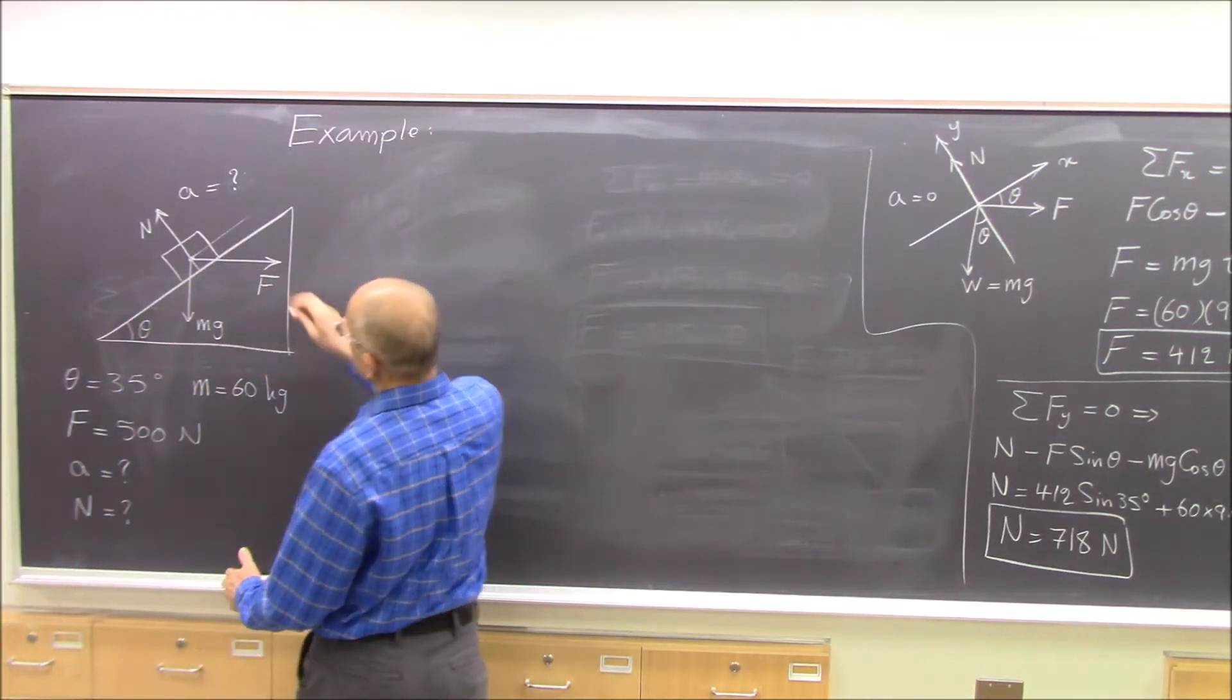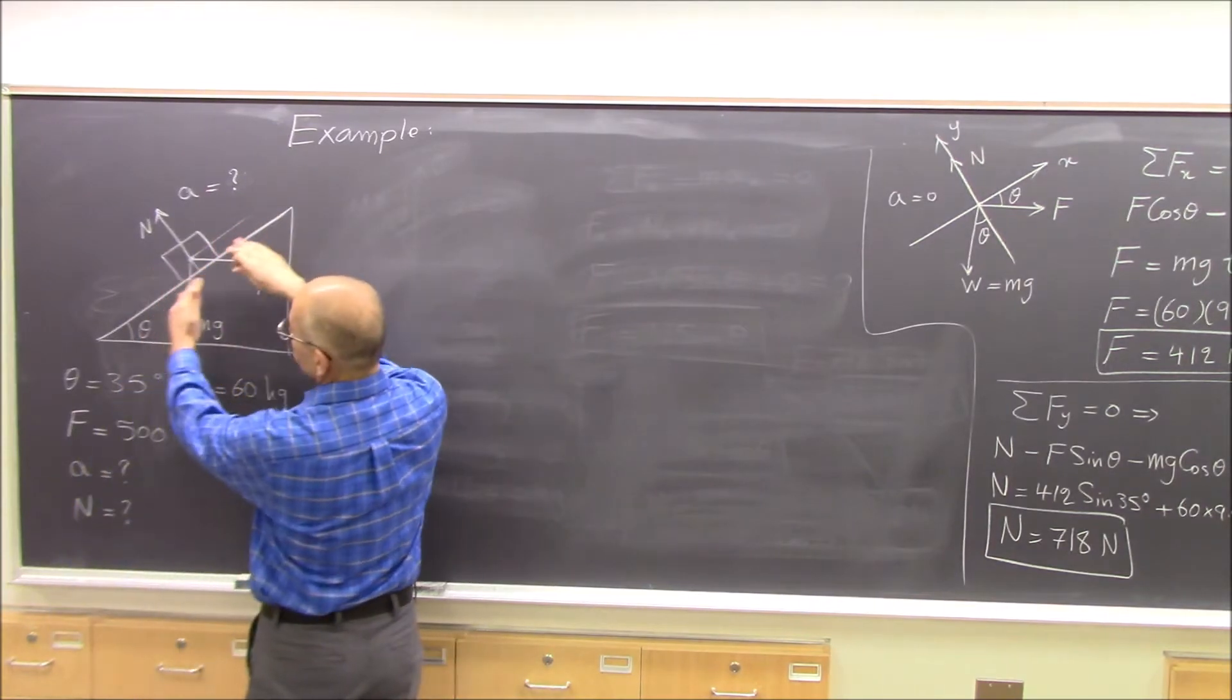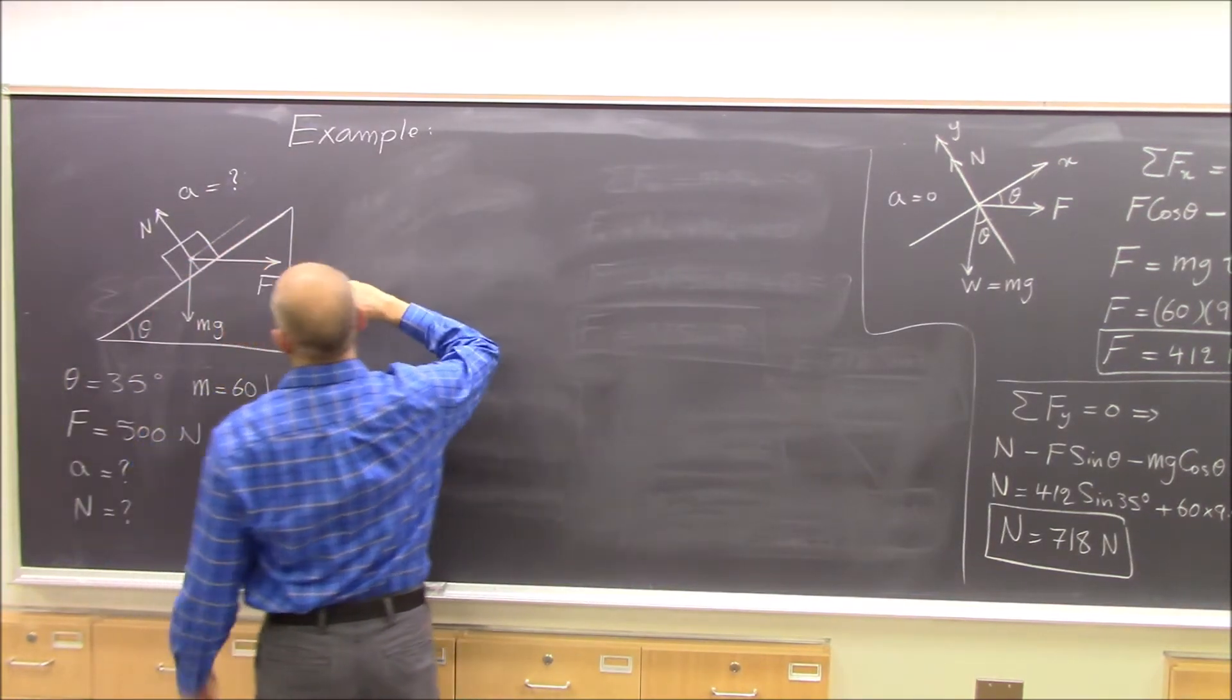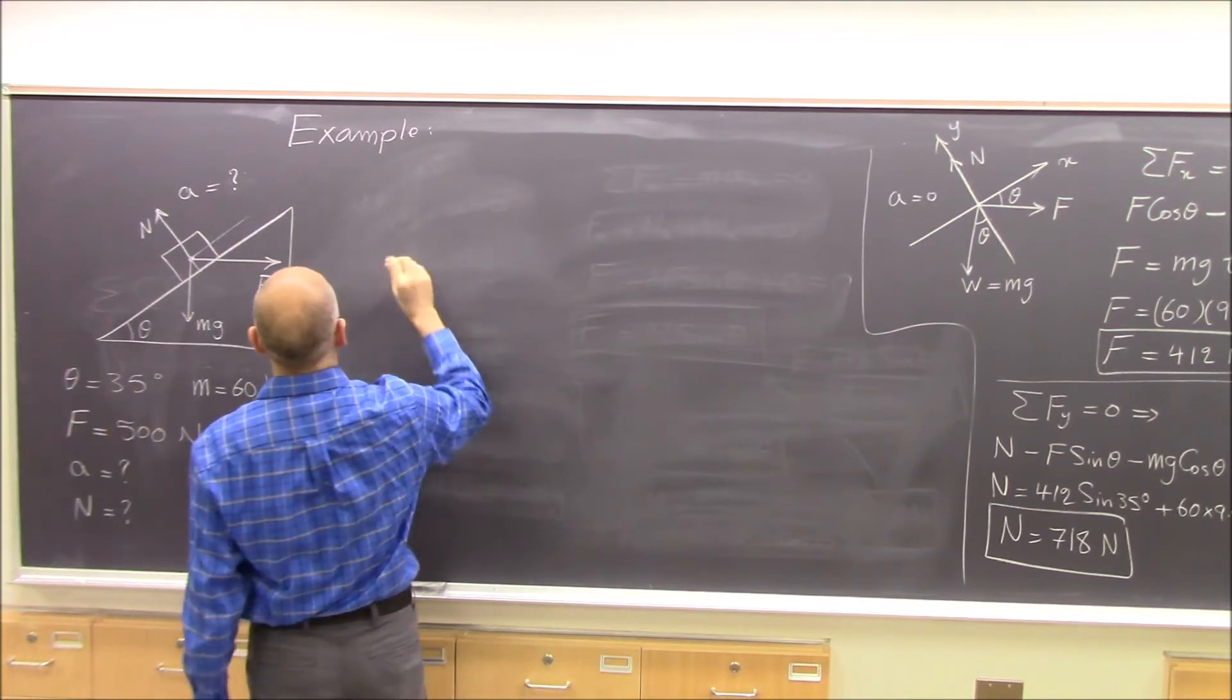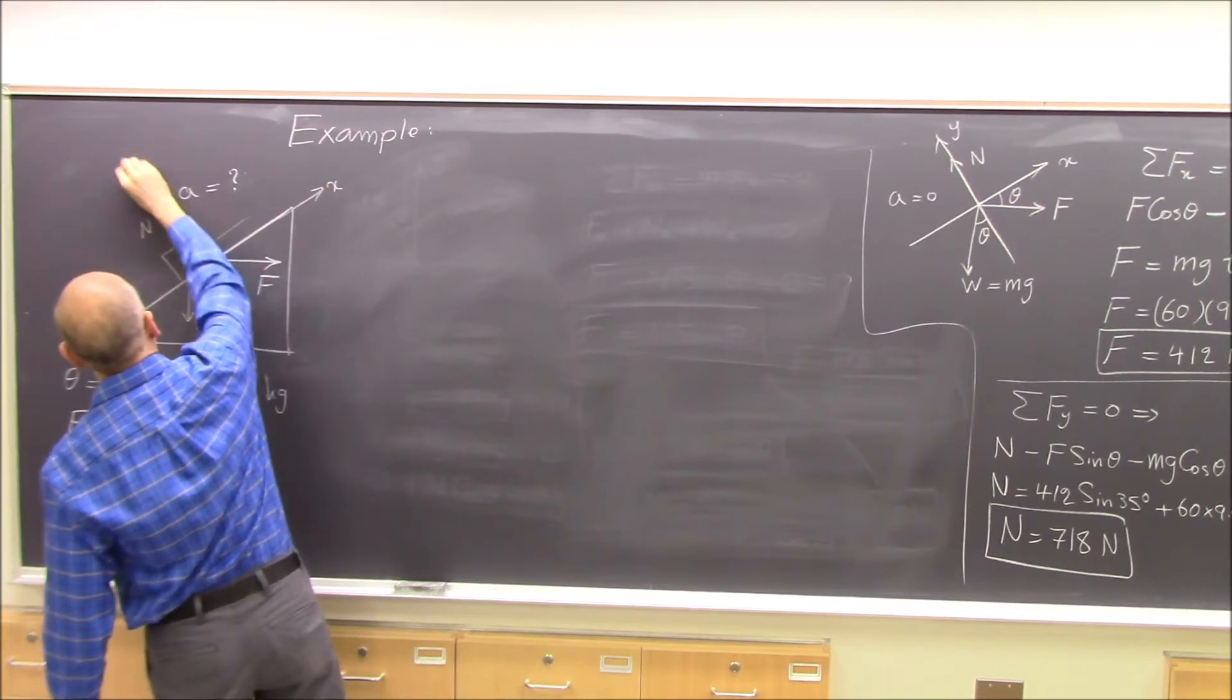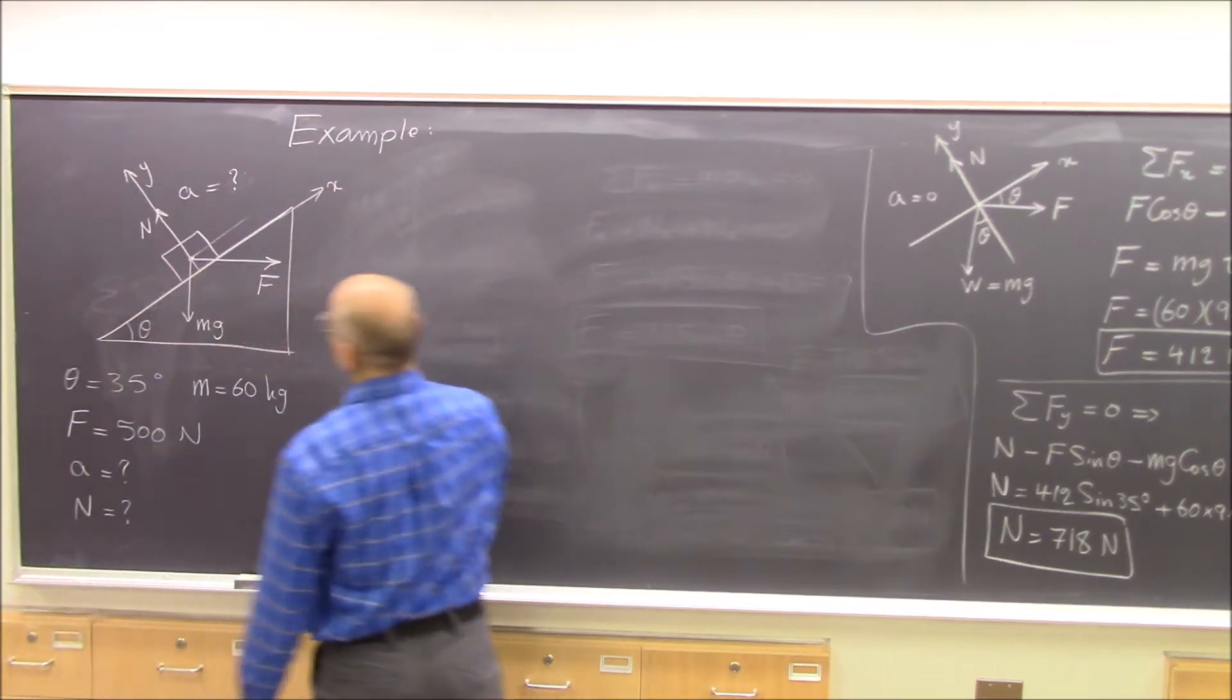We said that there's acceleration. If there's acceleration it will be along the ramp, so it would be in this direction. So we take the x-axis in that direction. This is our x-axis, and this is our y-axis perpendicular to the ramp.